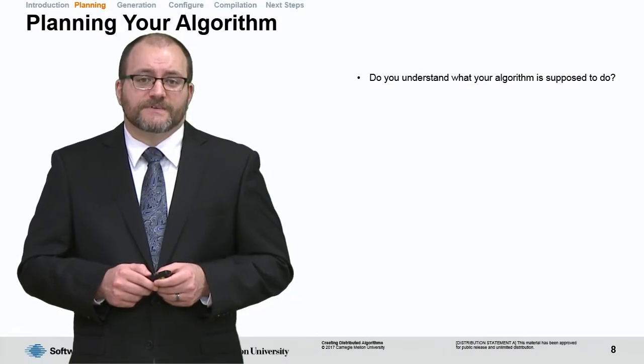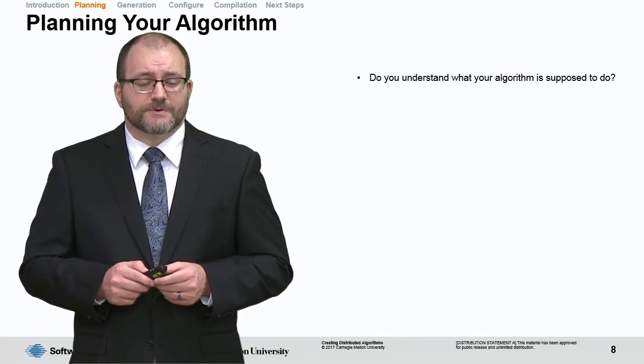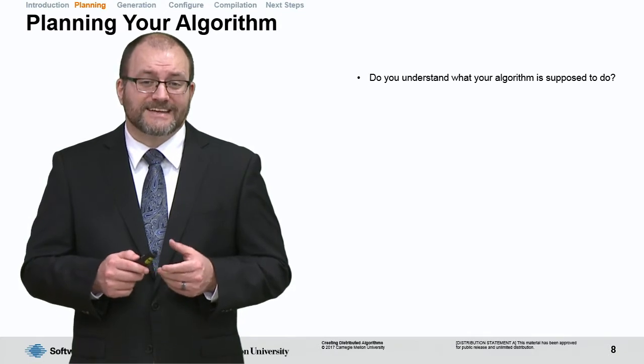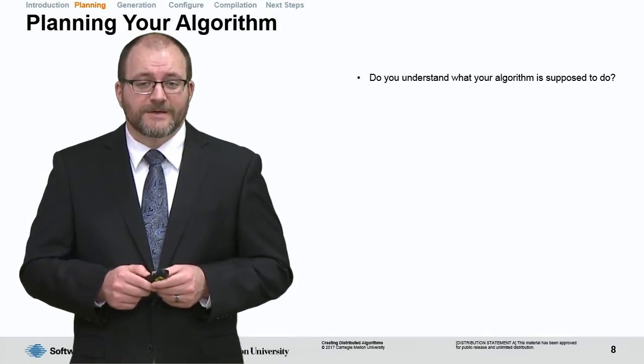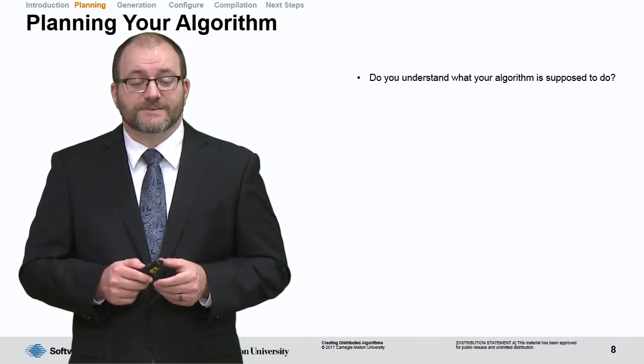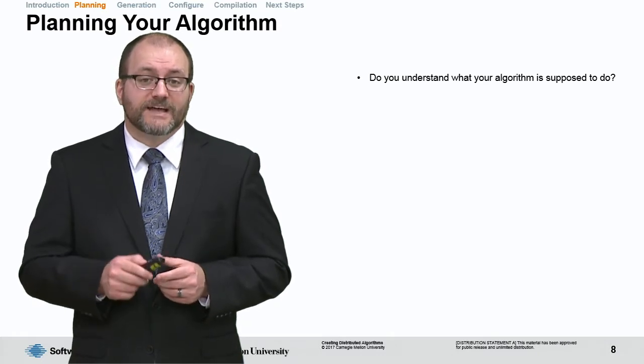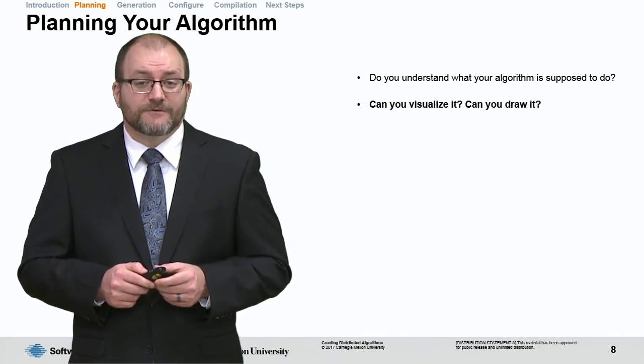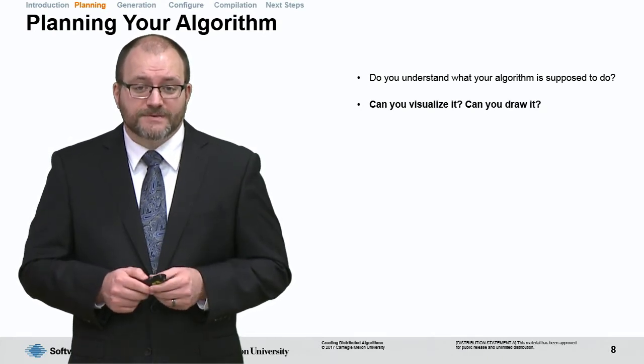Another question to ask yourself is: do you understand what your algorithm is supposed to do? This is actually the hardest part of coding an algorithm, visualizing or understanding exactly what your algorithm wants to do. Many people start an algorithm just wanting to start something, but really, you should plan out what your algorithm needs to do. Can you visualize it? Can you draw it on a piece of paper?